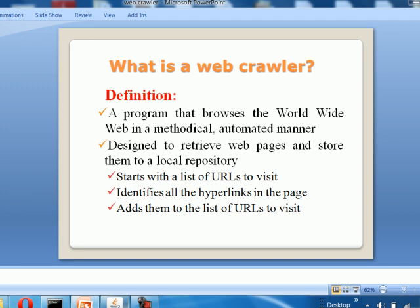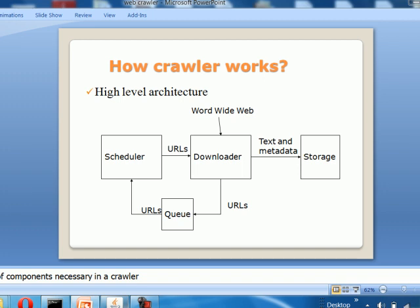It is also used to validate the HTML code or hyperlinks on particular web pages that have been traversed. The procedure of the working of the crawler is as follows: initially, a list of URLs is given and it identifies all the hyperlinks in the page and adds them to the list of URLs to visit. The diagram explains the working of the crawler. The scheduler takes some set of URLs, the hyperlinks in those pages are downloaded, added to the queue, and the relevant URLs are stored in the storage panel.